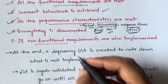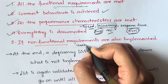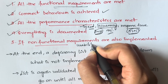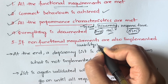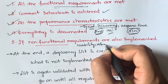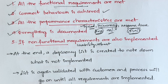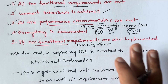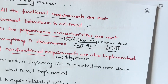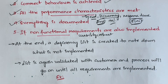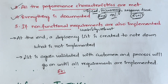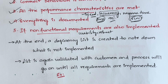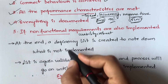Whether all the non-functional requirements are also implemented or not is checked as well. Non-functional requirements include things like usability and robustness — whether all these are implemented is verified in validation testing.